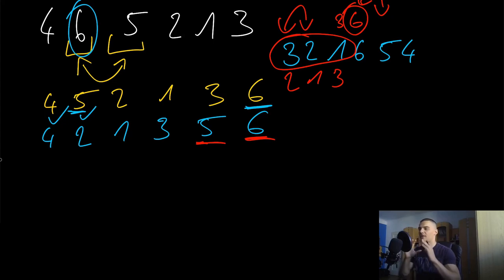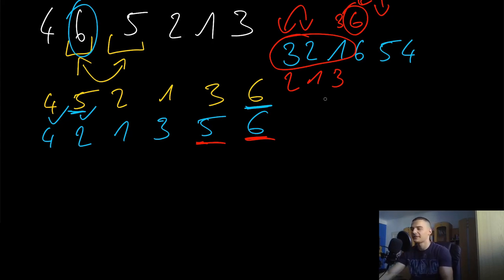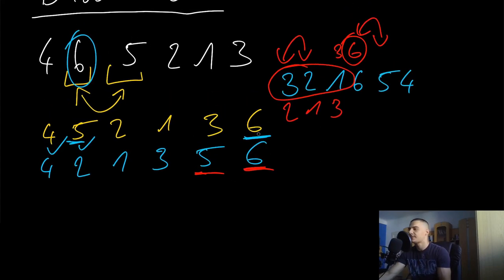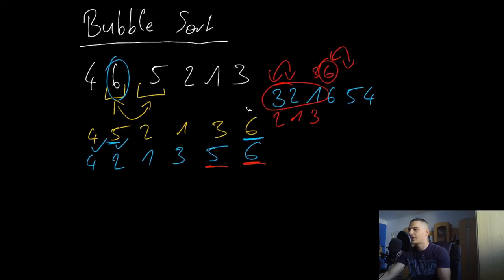After a maximum of n iterations you'll have a sorted list, because you've placed n elements into their correct positions and the list has n elements. This is the basic intuition behind bubble sort.